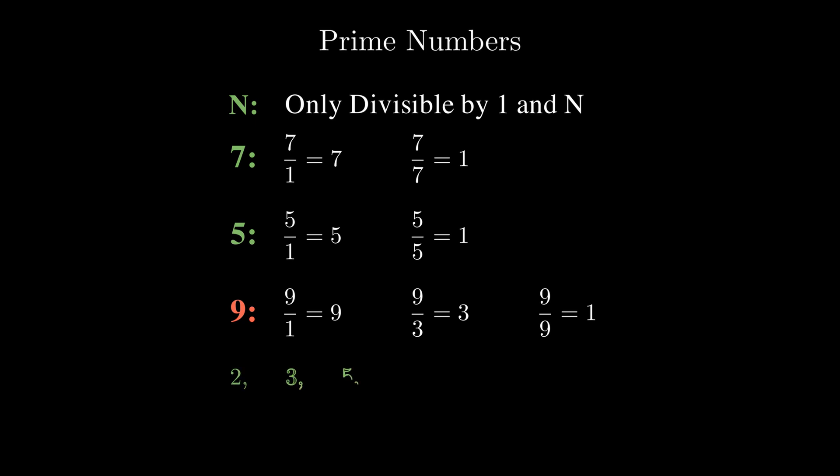So numbers like 2, 3, 5, 7, 11, or 13 are prime numbers, as they are only divisible by 1 and themselves. While numbers like 4, 6, 8, 9, 10, or 12 are not prime, as they have other divisors.